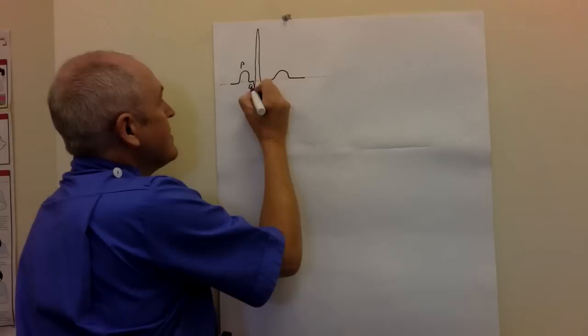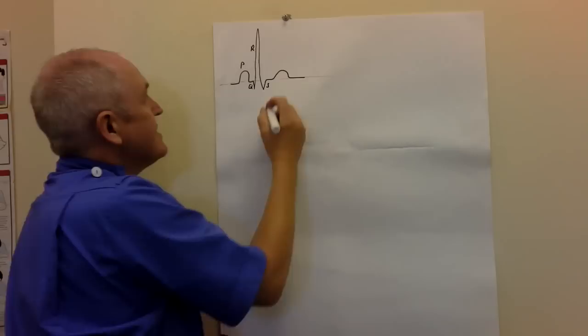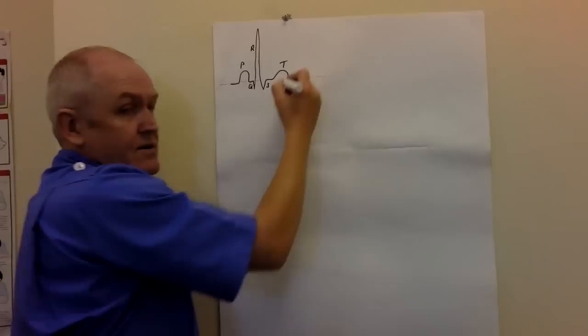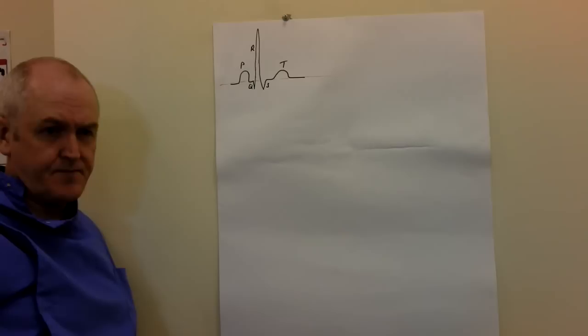So we've got P; the Q is the bit that goes down. Q, R, and the bit that goes down here is the S. So collectively we've got the QRS complex together. Then this wave here is the T wave. So we've got P, Q, R, S, T in that order.